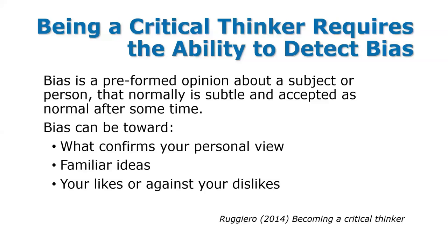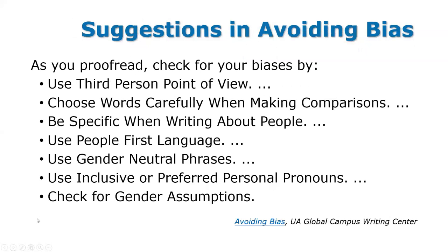It is an important first step to know that we have biases. There are ways to improve at limiting the more obvious ones that can inhibit our pursuit of objectivity. Some suggestions for avoiding bias include: use third-person point of view, choose your words carefully, be specific when writing about people, use first language, use gender-neutral phrases, be inclusive of preferred pronouns, and check for gender assumptions. These are just some that can help us better understand and avoid biases.